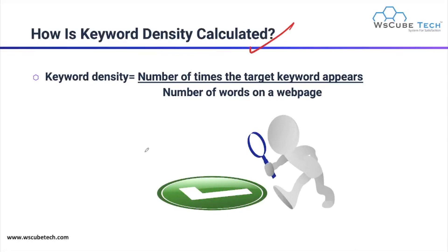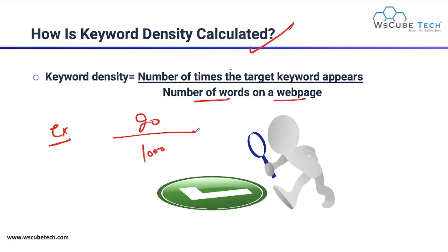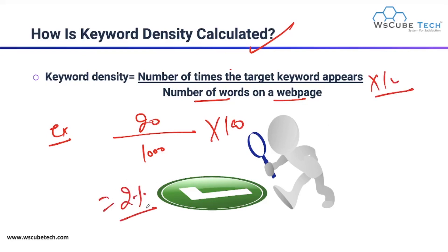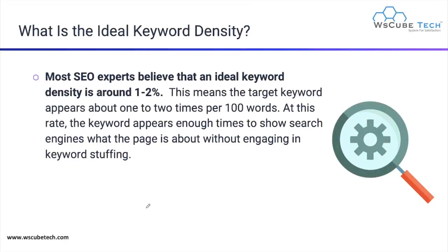To calculate your keyword density, we have a formula. For example, if the number of words on a web page is 1000 and the number of times the targeted keyword appears is 20, then multiply by 100. The keyword density would be 2%, which is a good keyword density. Using this formula, you can calculate your keyword density.